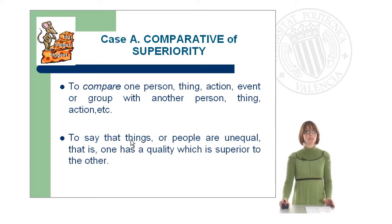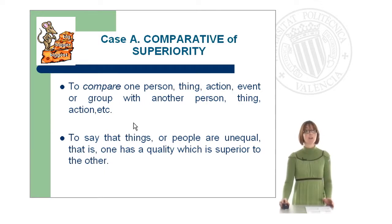Now we're going to have a look at the first type, which is the comparative of superiority. When do we use the comparative of superiority? We normally use the comparative to compare one thing, action, event or group with another thing, action, event or group. We also use it to say that things or people are unequal — this means that one has a quality which is superior to the other.